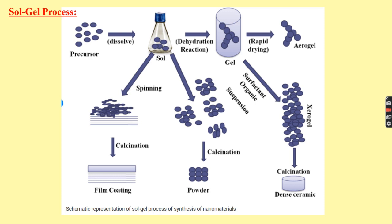The sol-gel process can be characterized by a series of distinct steps. The first step is preparation of the precursor solution. The precursor can be inorganic or, most often, a metal-organic precursor. The most common organic precursor for the sol-gel process is metal alkoxide. In a typical sol-gel process, the precursor undergoes a series of hydrolysis and polymerization reactions to form a colloidal suspension called a sol.